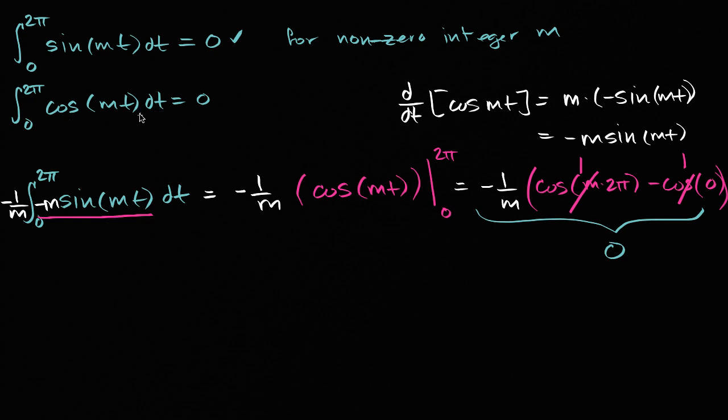So now let's prove the second one. It's going to be a very similar argument. So let's rewrite it. We're gonna get the integral from zero to two pi of cosine of mt dt. And now let me engineer this a little bit. We know that the derivative of sine of mt is m cosine mt. So let me multiply and divide by m.